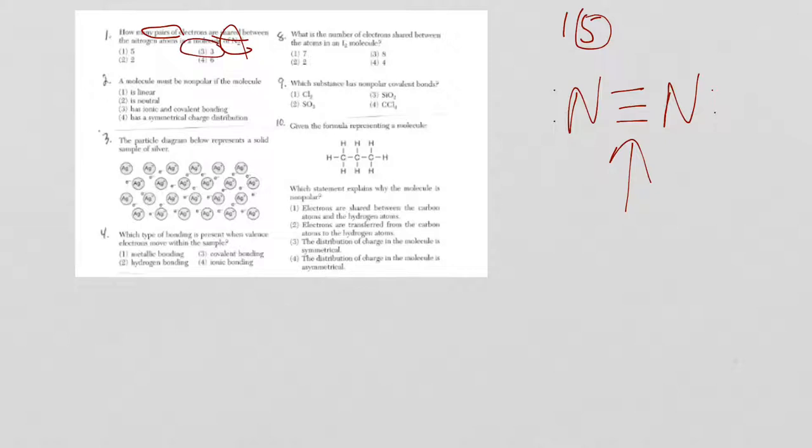Let's move on to the next. A molecule must be nonpolar if the molecule. When you go through the choices, what you're looking for is a snap. In other words, this can be used to remember that symmetrical for nonpolar, asymmetric for polar. So sure enough, nonpolar, symmetrical, and there it is in choice four.